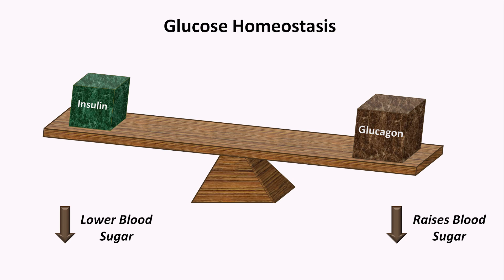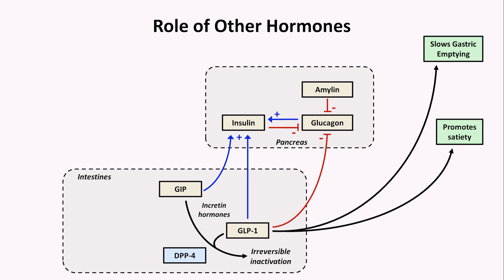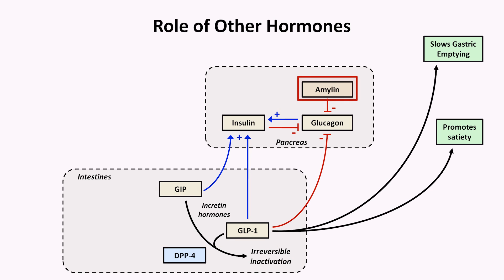However, the insulin-glucagon paradigm of glucose homeostasis is a significant oversimplification. There are at least seven other hormones involved which regulate the secretion of insulin, either directly or indirectly. If we strip away all but the essentials necessary to understand treatment, we are left with three remaining hormones to worry about. These include the incretin hormones GIP and GLP-1, which are secreted by the intestines in response to the ingestion of fat and carbohydrates. Both stimulate insulin release. GLP-1 in particular slows gastric emptying and promotes satiety. Both incretin hormones are inactivated by the enzyme DPP-4. There is also a hormone called amylin, which is co-secreted with insulin by pancreatic beta cells in response to a glucose load and acts to inhibit glucagon.